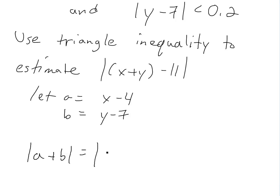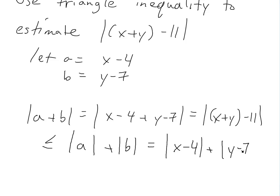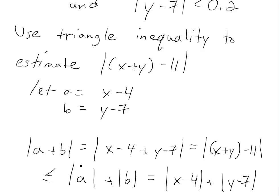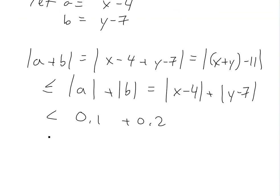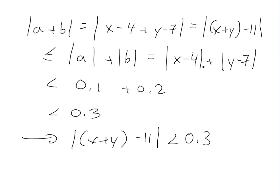A plus B equals X minus 4 plus Y minus 7, which equals X plus Y minus 11. By the triangle inequality, the absolute value of A plus B is less than or equal to the absolute value of A plus the absolute value of B, which is less than 0.1 plus 0.2. So the absolute value of X plus Y minus 11 is less than 0.3. That's our answer.